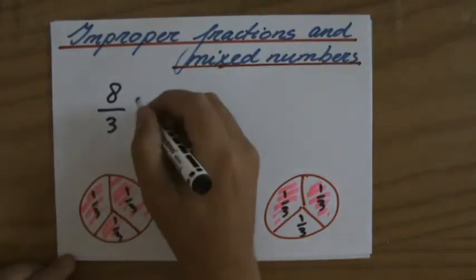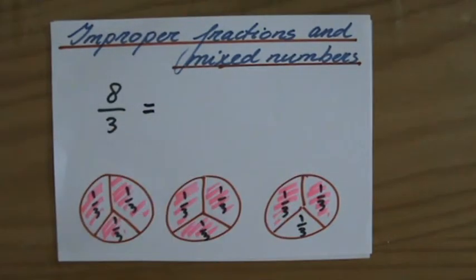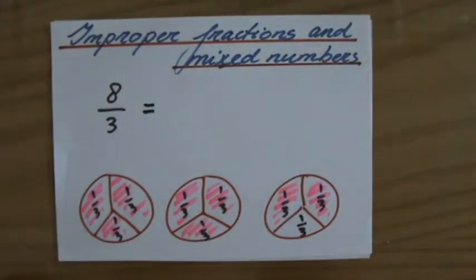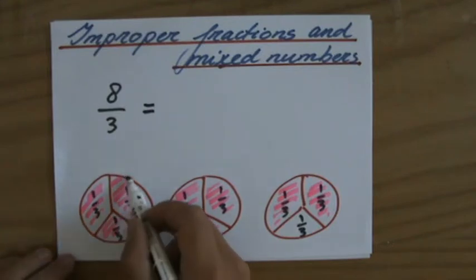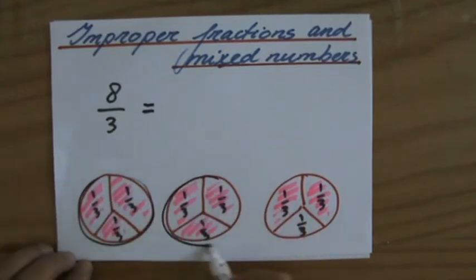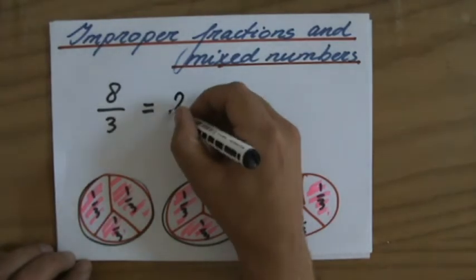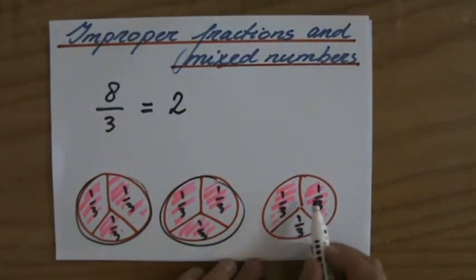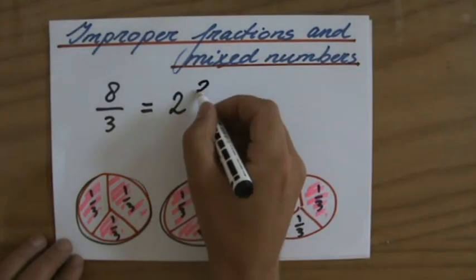Now, have a look now at my pizzas. How can I now turn my improper or top-heavy fraction into a mixed number, where a mixed number is a whole number and a fraction? Well, how many wholes do I have? How many complete pizzas do I have? Well, I have 1, 2 pizzas. So I have 2 wholes. And I still have a fraction of a pizza. And I have 2 thirds.